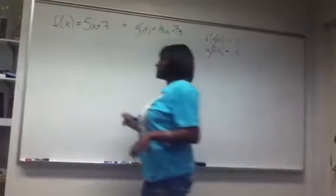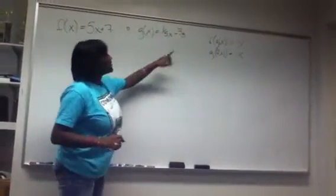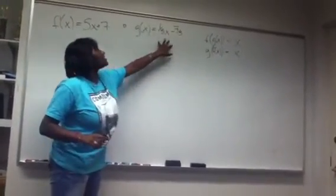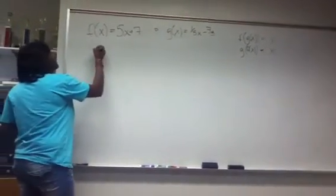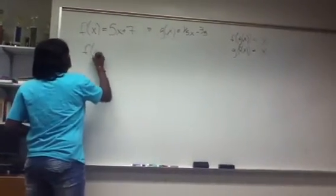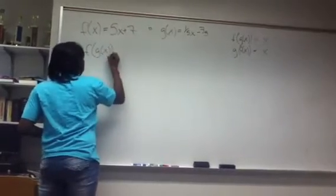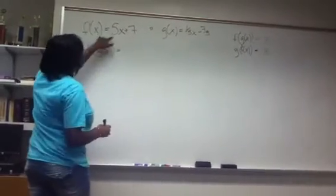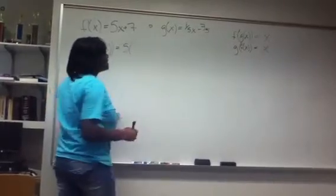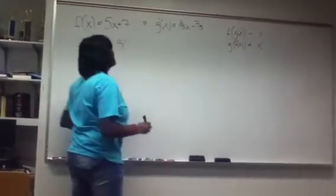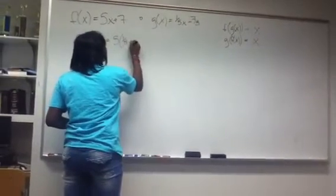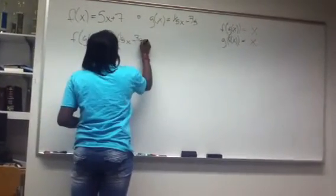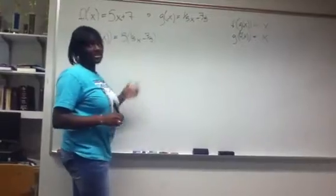So in order to solve these, we have to plug in, for the first one, we have to plug in the g of x equation for x in both cases. So we have the function of g of x would equal 5 times the quantity of 1/5 x minus 7/5, because we have to plug it in. And then we still have to have the plus 7.